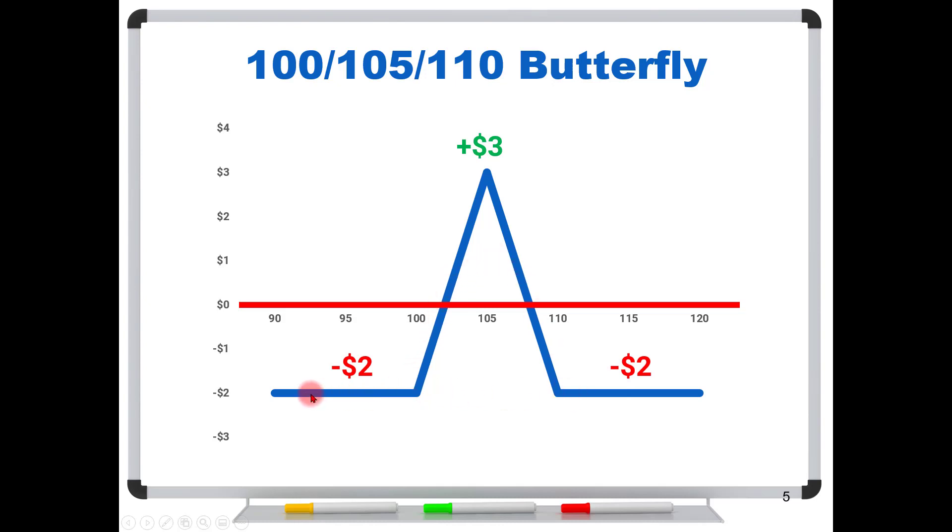But the thing to notice is that when you are at expiration, even in a fairly complicated strategy like a butterfly, the profit and loss diagram is still constructed with straight lines. If you're over here below 100, delta zero. If the stock is above 100 but less than 105, you're delta one. If the stock is above 105 and below 110, on this right side over here, you are delta minus one. You see how this line here is leaning to the left? It's behaving like short shares of stock. And then finally, if the stock is above 110, you are delta zero. So yes, you are built with straight lines at expiration.